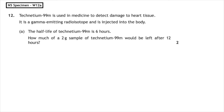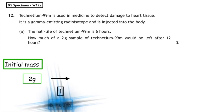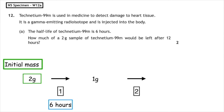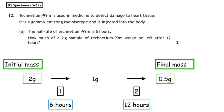This past paper question is from the National 5 specimen, written paper 12A. Technetium-99 is used in medicine to detect damage to heart tissue. It is a gamma-emitting radioisotope and is injected into the body. The half-life of technetium is 6 hours. How much of a 2 gram sample would be left after 12 hours? Starting at 2 grams: after one half-life (6 hours) → 1 gram; after a second half-life (12 hours) → 0.5 grams. The final mass of technetium is 0.5 grams.